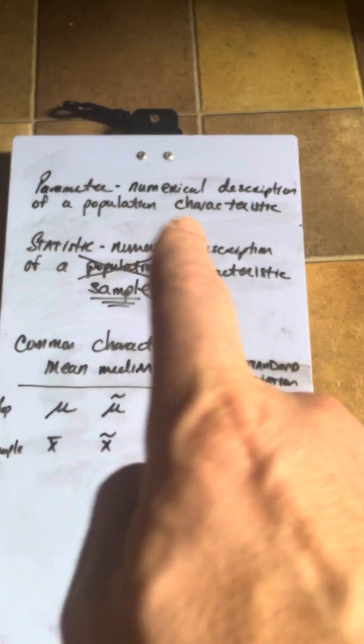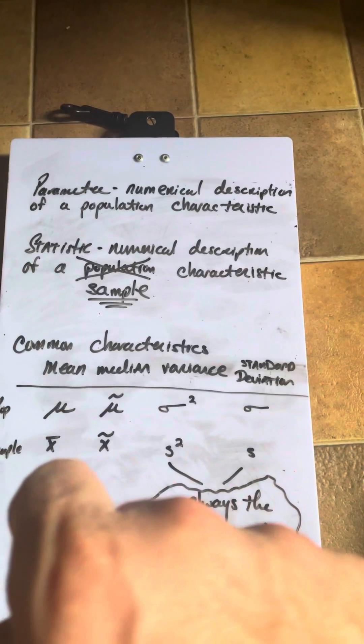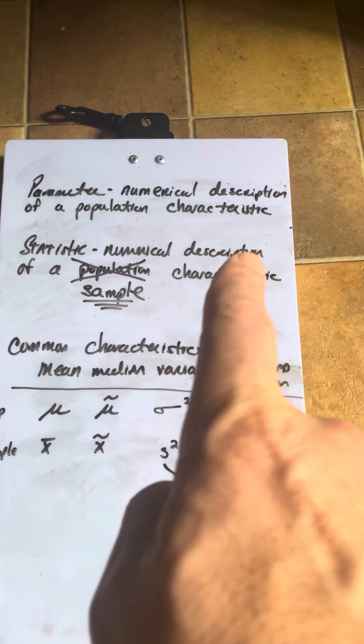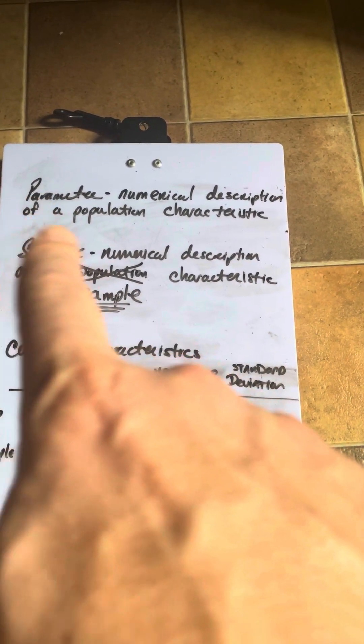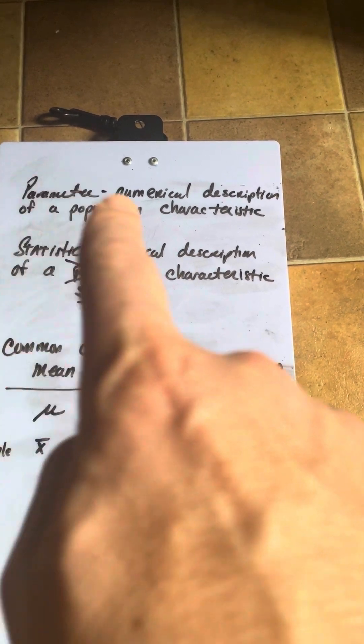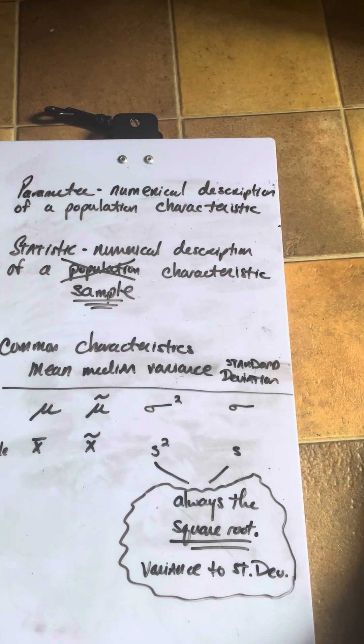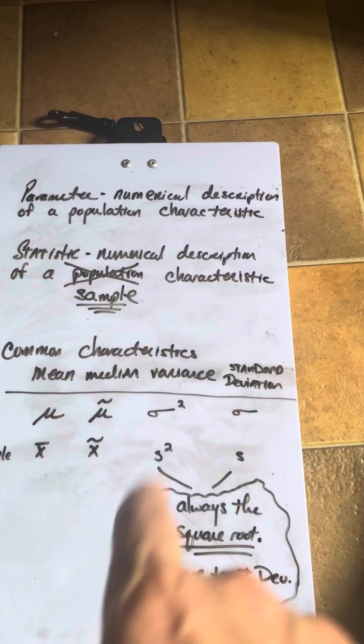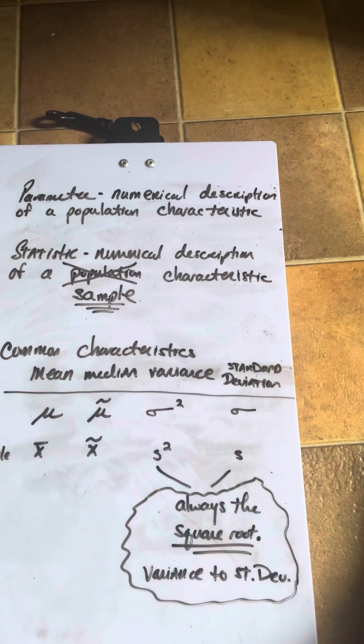Both of them are numerical descriptions. They both start off with the terms numerical descriptions. Now, a parameter is from a population and it's a numerical description of a population characteristic.